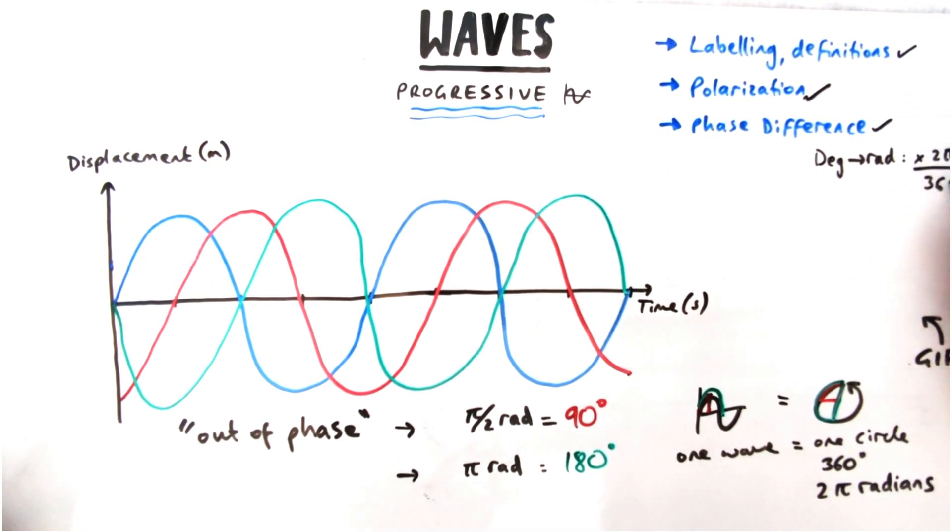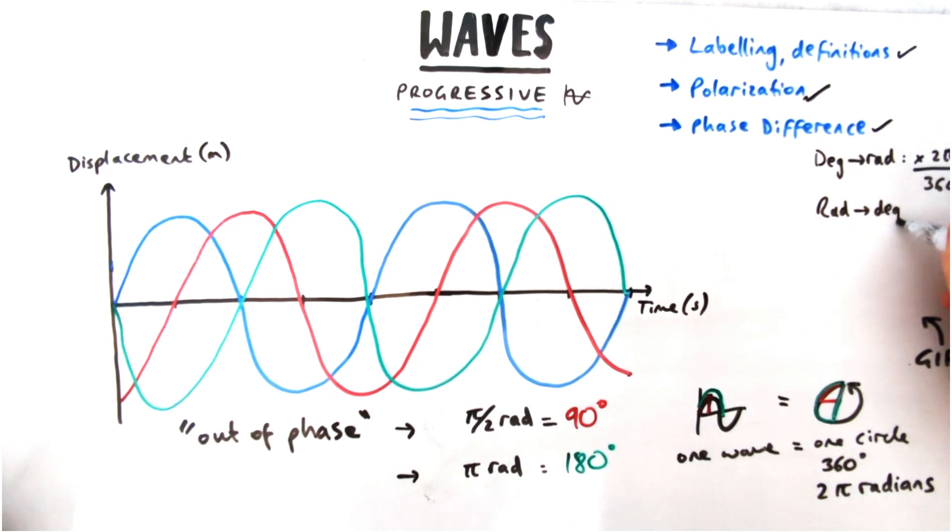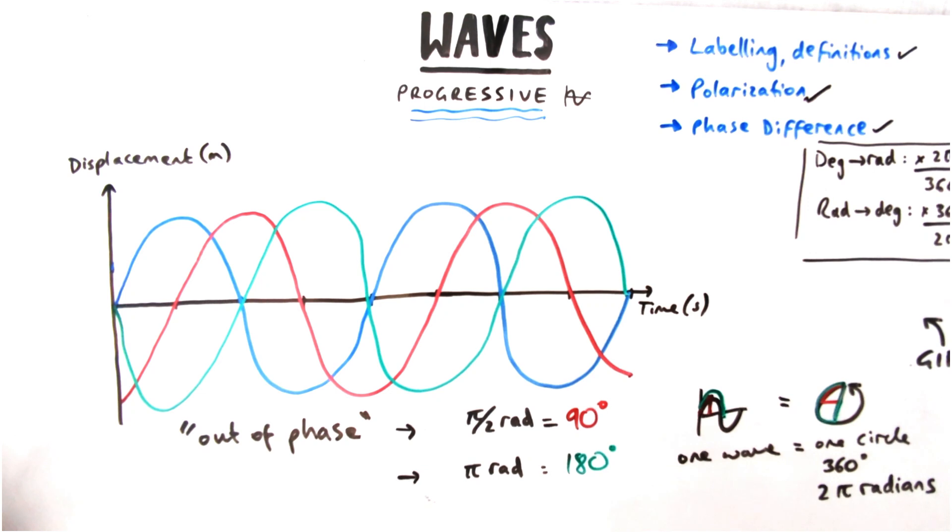I've also got a little link up here on how to convert between them. You times by 2π over 360 or to convert radians to degrees, you times by 360 divided by 2π.